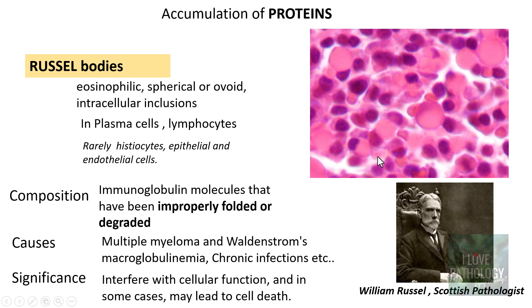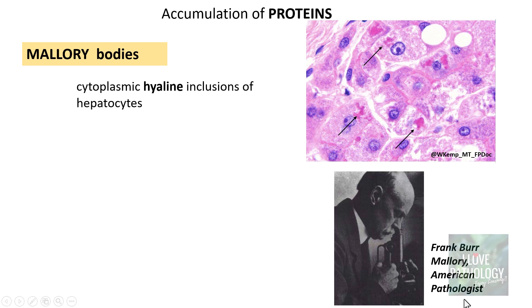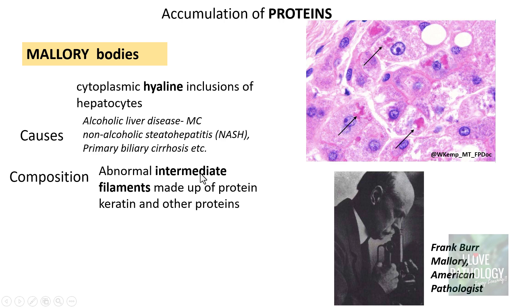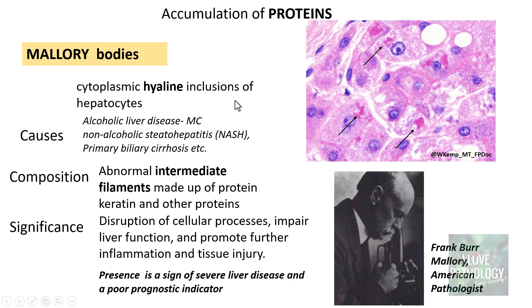The third example is Mallory bodies. These are cytoplasmic hyaline or eosinophilic, glassy-like inclusions in hepatocytes, named after American pathologist Dr. Frank Burr Mallory. Most commonly seen in alcoholic liver disease, they are also found in non-alcoholic steatohepatitis (NASH) and primary biliary cirrhosis. They are composed of abnormal intermediate filaments made up of the protein keratin. Their significance is that they disrupt cellular processes, impair liver function, and promote inflammation and tissue injury. Importantly, the presence of Mallory bodies is a sign of severe liver disease and a poor prognostic indicator.